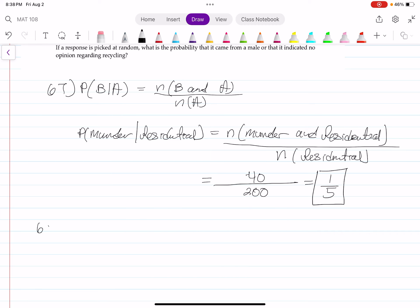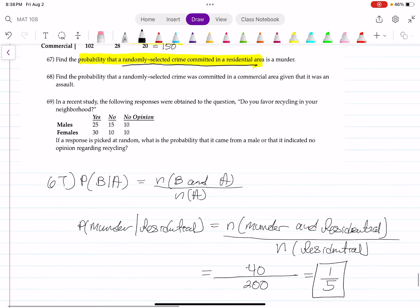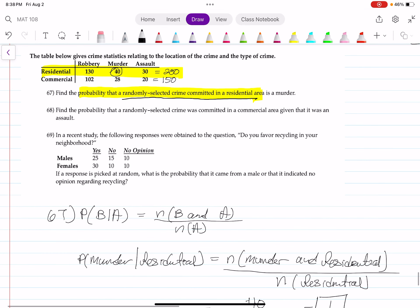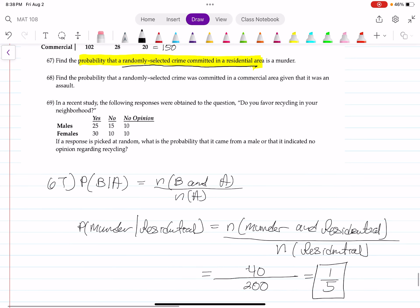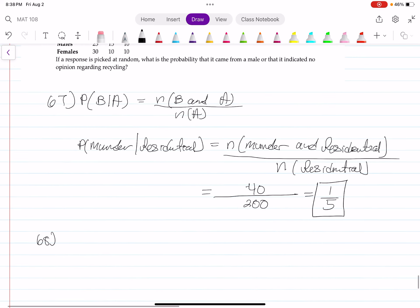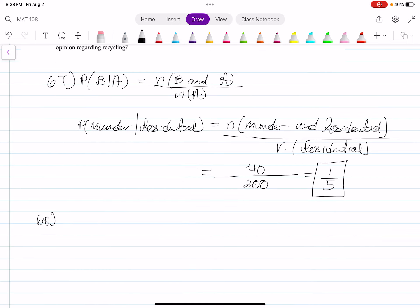Number 68. Find the probability that a randomly selected crime was committed in a commercial area, given that it was an assault. The key word is given. When we see the word given or something that applies to the word given, we can use the conditional probability formula.